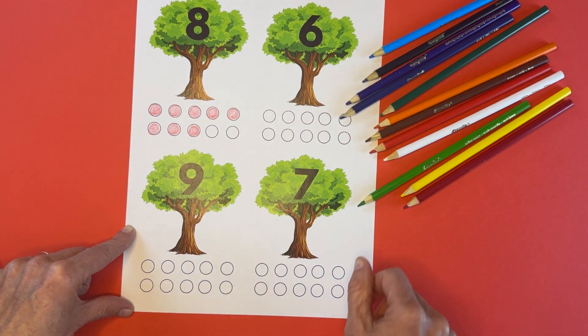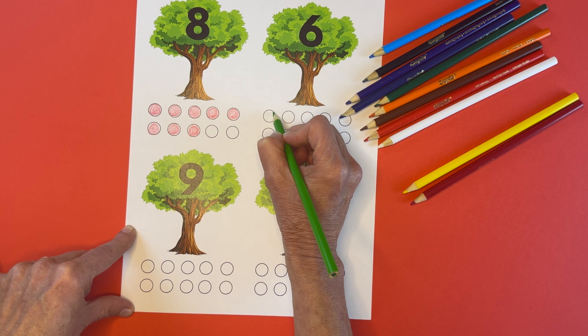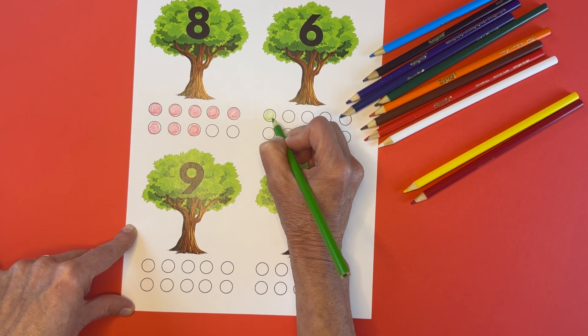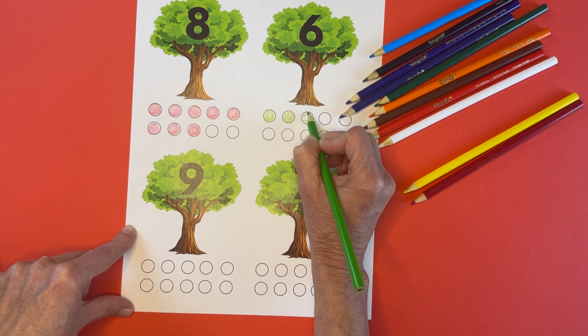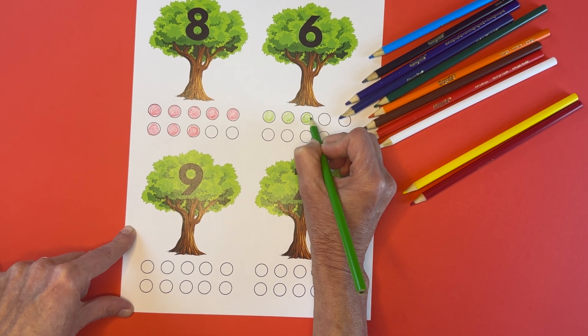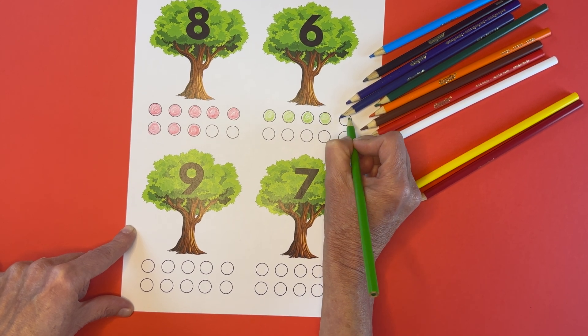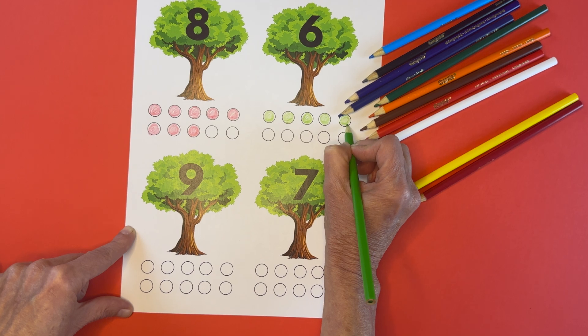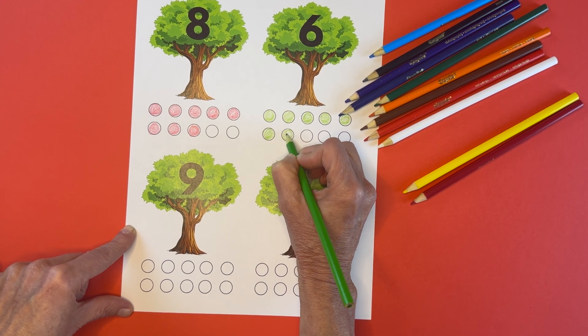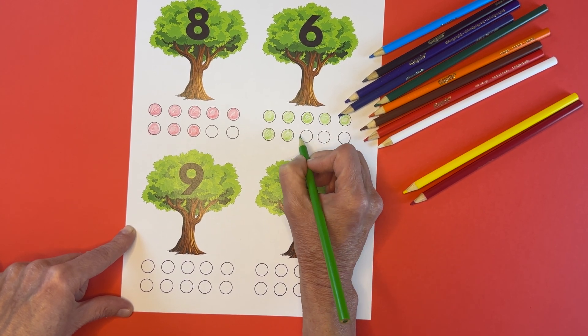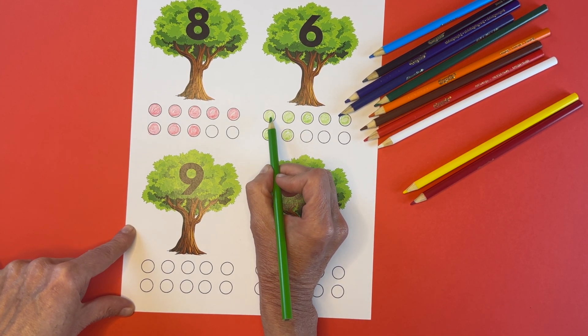Over here we have six. So you know what we're going to do? We're going to color in six green apples. Here we go. One, two, three, four, five, six, seven. I went one too many, you say? Let's count it again and make sure.